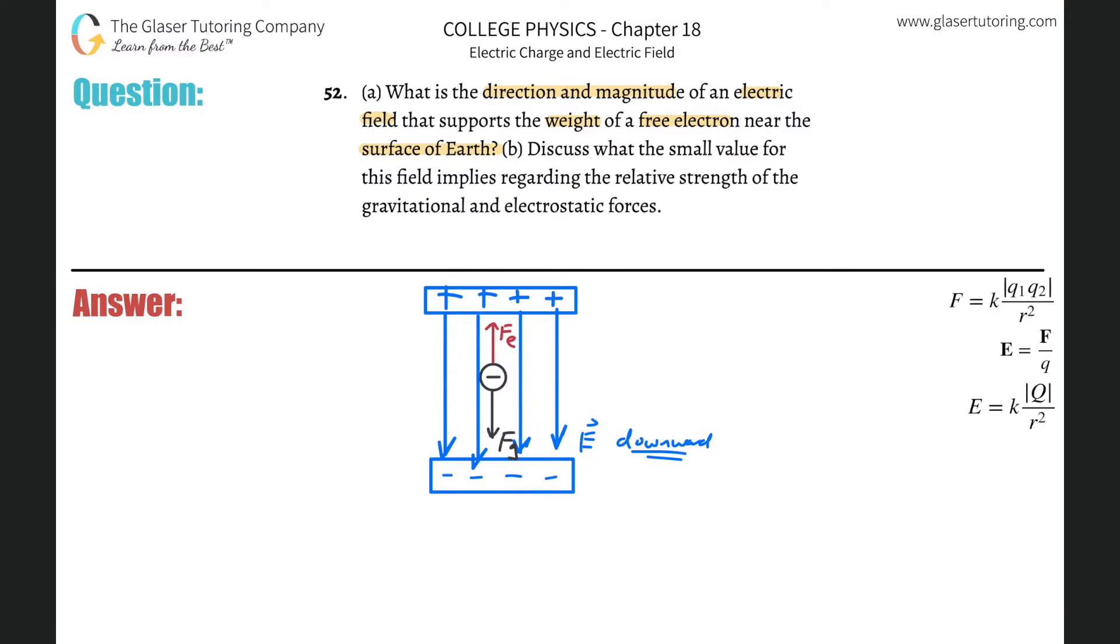Now, we know the direction. Can we calculate the magnitude? Well, sure. We know that if this thing is floating, we know that the sum of the forces that are acting on that particular electron better equals zero, right? So what are the forces acting on that? Why is it zero? Because remember, force is equal to mass times acceleration. If it's not moving at all, there's definitely no acceleration, and therefore this whole side just goes to zero.